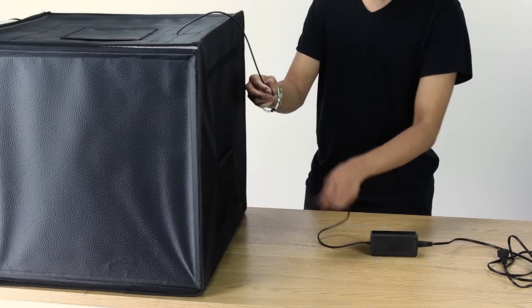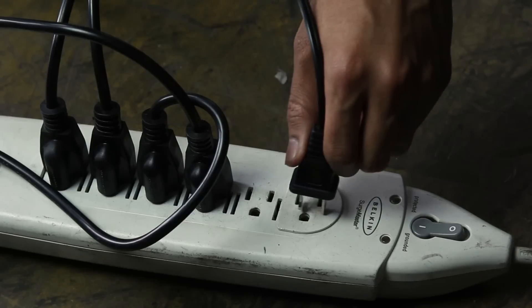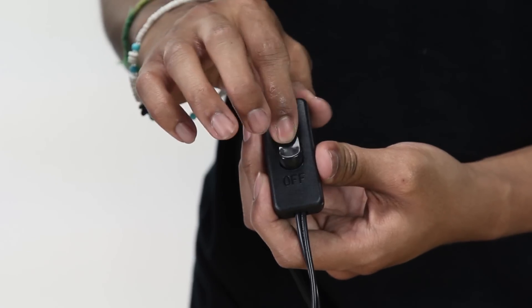Now it's time to power the tent's integrated LED lights. Assemble the power cable and plug it into the cable on the back of the light tent. Plug the power cable into an available electrical outlet and switch the light on.